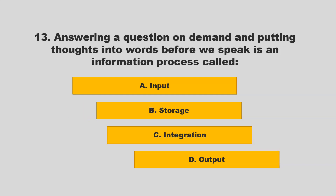Answering a question on demand and putting thoughts into words before we speak is an information process called: A) input; B) storage; C) integration; D) output. If you chose D — output — you are correct.